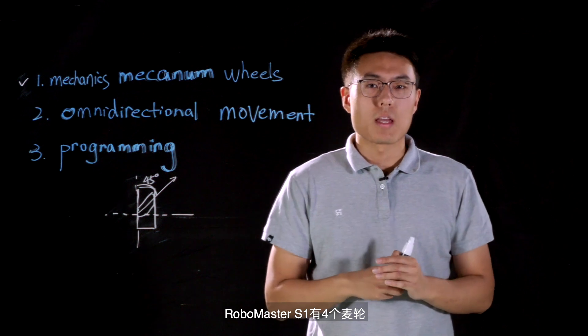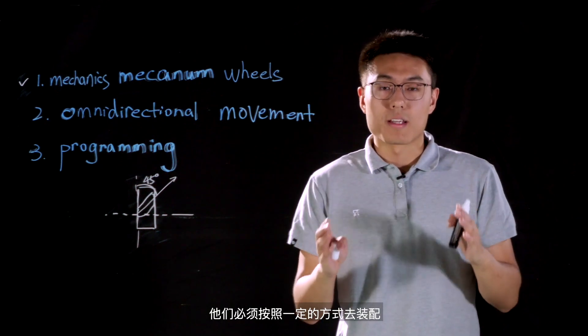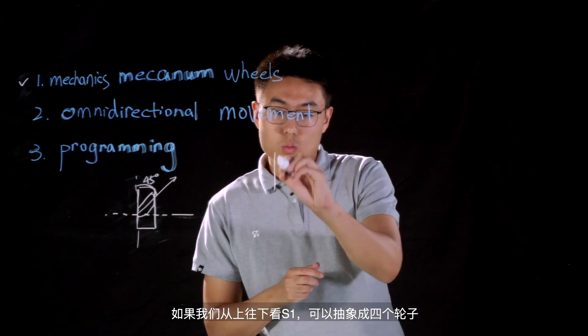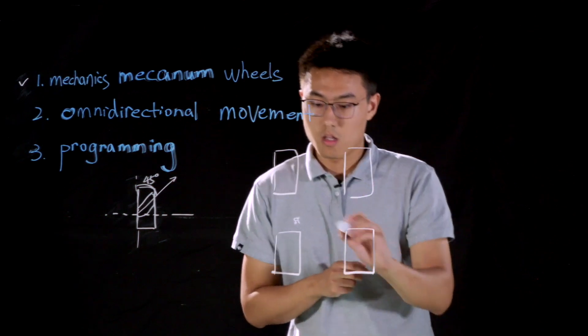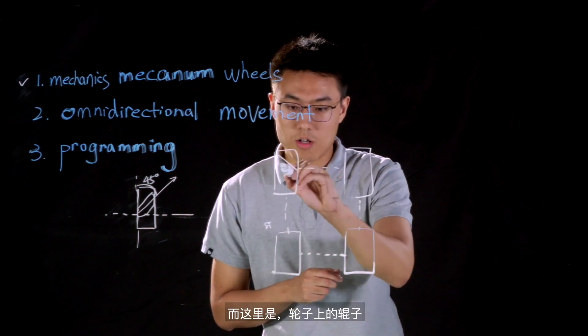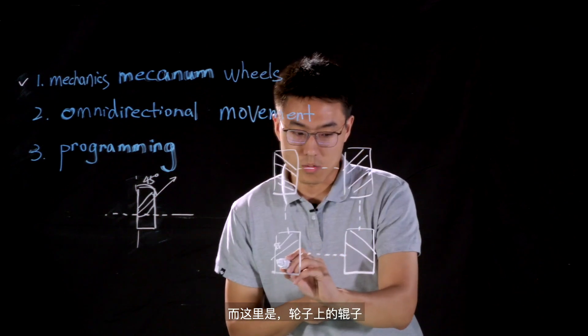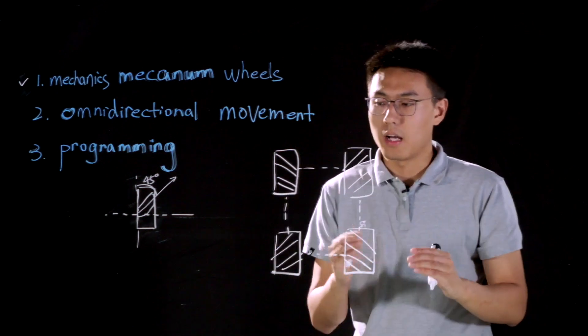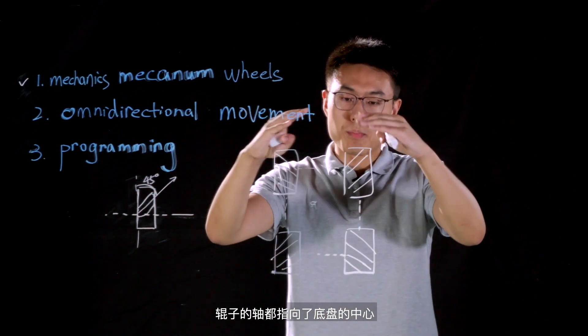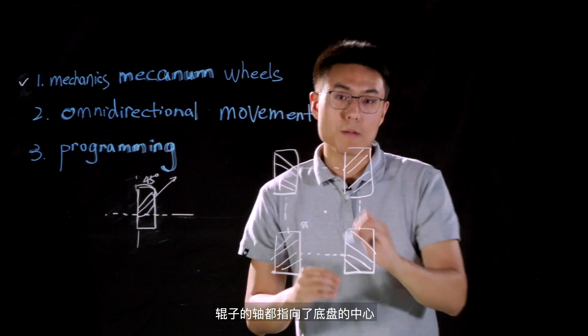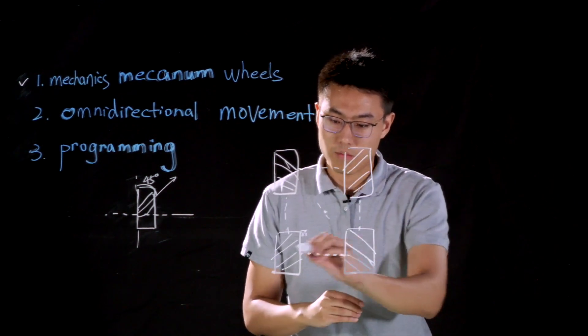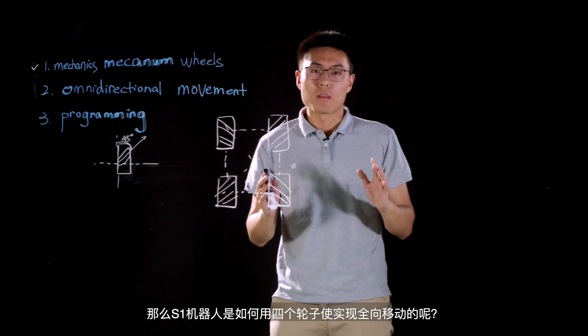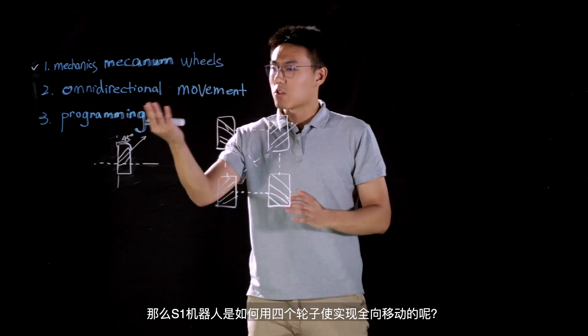RoboMaster S1 has four Mecanum wheels, and they must be installed in a certain way. If we look from the top of S1, we can actually abstract S1 into four wheels and the chassis, and here are the rollers of each wheel. And you may notice that the axis of each roller is pointing to the geometrical center of chassis. And it forms an X after being connected. So, how do RoboMaster S1 use these four Mecanum wheels to realize omnidirectional movement?